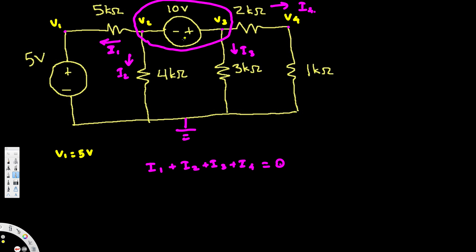We also have an additional equation from the supernode. Here we have a plus and a minus terminal — plus means higher potential. If you subtract lower potential from higher potential, that voltage difference equals the source voltage. So we can create this constraint equation as equation one, and equation two comes from Kirchhoff's Current Law.